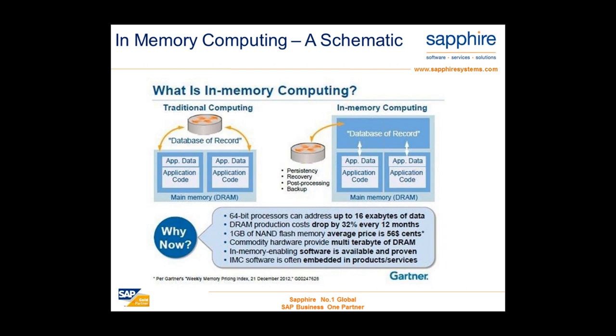Well-known industry analysts such as Gartner — shown on screen — are increasingly seeing that in-memory computing is going to become more and more important for all types of business going forward. The diagram here gives an example of the traditional method on the left against the in-memory solution we've just talked about, and you can see the different approach to how the data is queried, how it is modeled, and how it is then able to be much more quickly processed in the RAM memory.